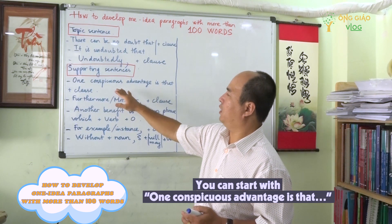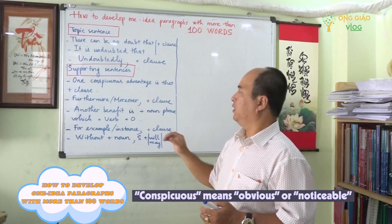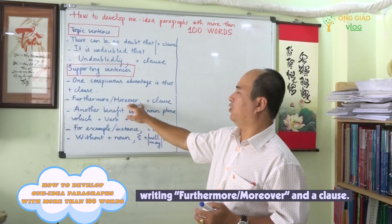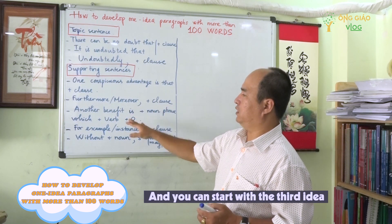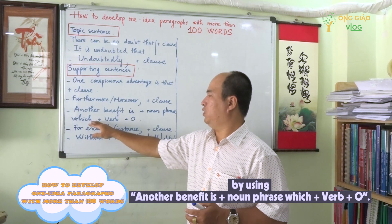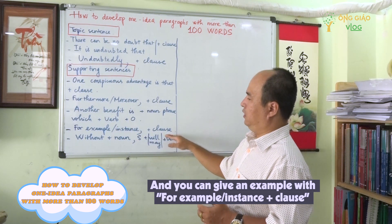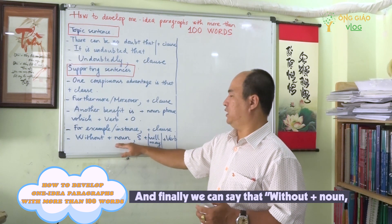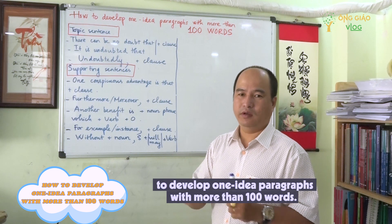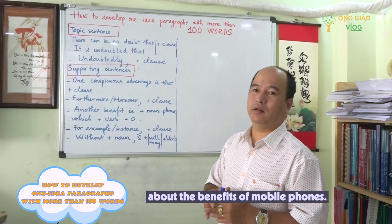For supporting sentences: start with 'one conspicuous advantage is' — 'conspicuous' means obvious or noticeable — followed by a clause. The second sentence can introduce another idea with 'furthermore' or 'moreover.' The third idea can start with 'another benefit is' plus a noun phrase, using a relative clause with 'which.' Then give an example with 'for example' or 'for instance,' and finally use 'without' plus a noun to show consequence. This is a very easy template to develop a one-idea paragraph with more than 100 words.